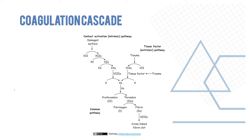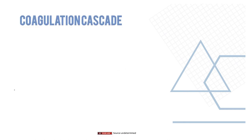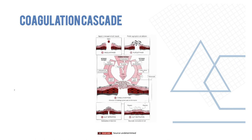This is the main coagulation cascade that brings about hemostasis. Vascular spasm in a damaged vessel initiates all of this, and then platelets are activated to bring about aggregation. Depending upon the insult, it could be an intrinsic or an extrinsic activation, ultimately forming a clot, which is finally retracted and then destroyed.